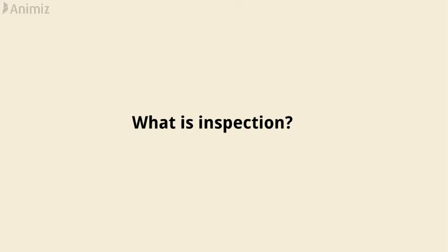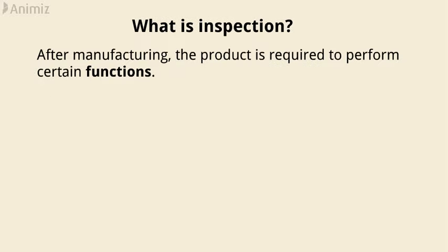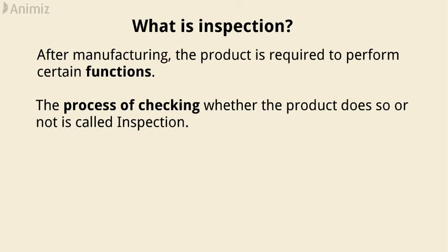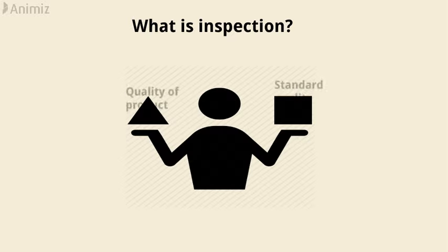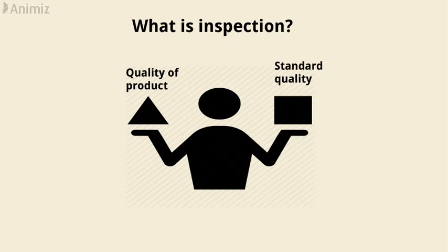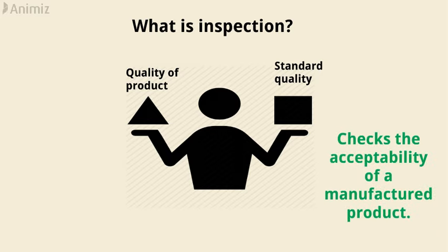What is inspection? After manufacturing, the product is required to perform certain functions. The process of checking whether the product does so or not is called inspection. Inspection compares the qualities of the product with a standard product during manufacturing. In other words, inspection is a process of checking the acceptability of a manufactured product.